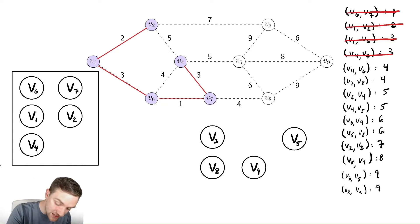We then see the next smallest edge is v4, v6. But if we check, v4 and v6 are both already part of the minimum spanning tree. And looking at the picture, we see that that would create a cycle.